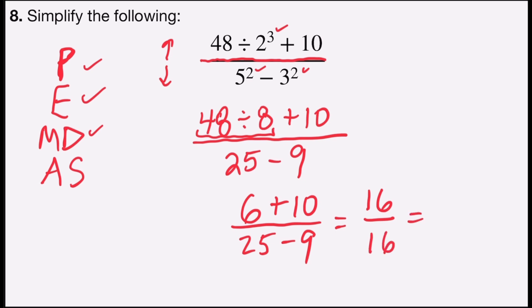And this is a clean division. 16 divided by 16 is 1, and 1 would be the simplest form of this answer.